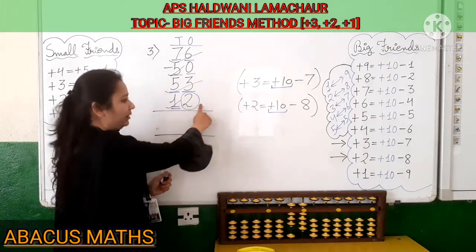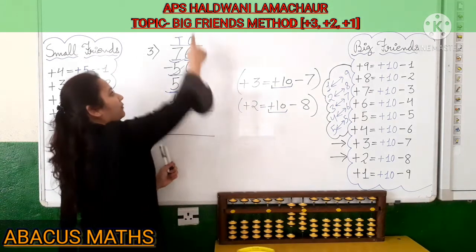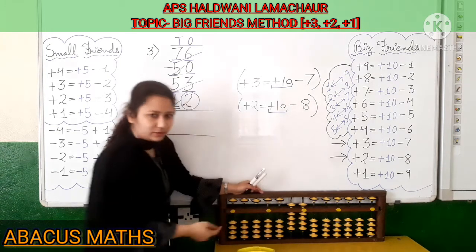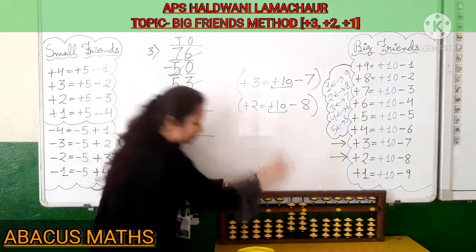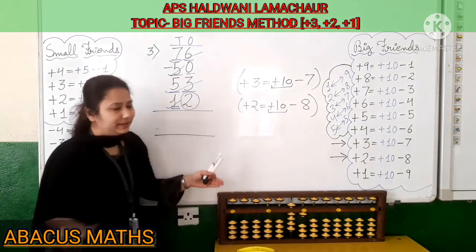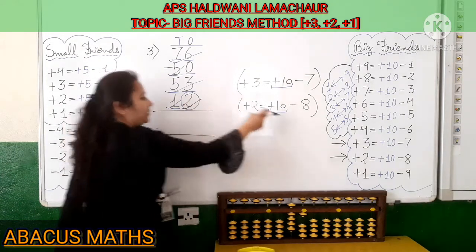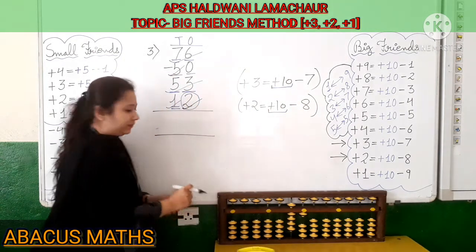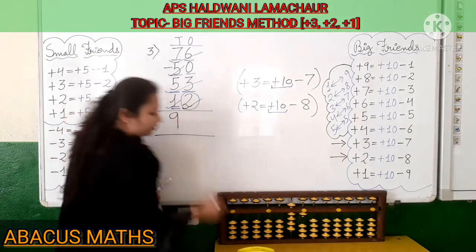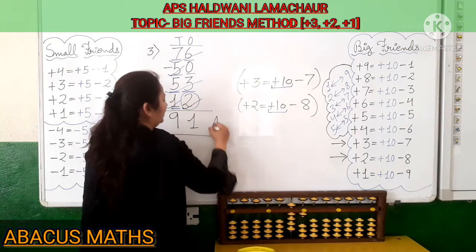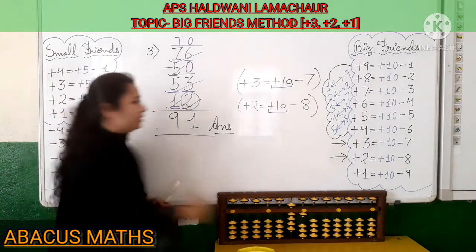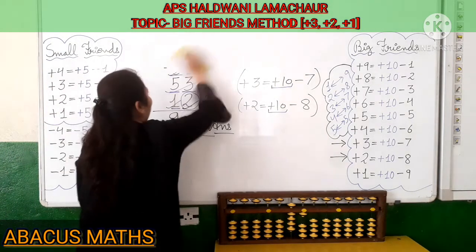Now we have to add 2. Since 2 goes in the ones slot, add 10 in the 10's slot and minus 8 from the same 1's slot: 5, 6, 7. And your sum is completed. 2 is added by applying plus 10 minus 8. Now count: 5, 6, 7, 8, 9 in the 10's slot and 1 in the 1's slot. So your answer is 91. I hope kids that you get this sum. Now we will move to our fourth sum.